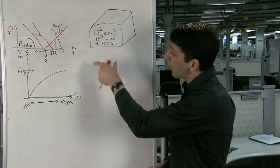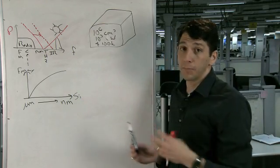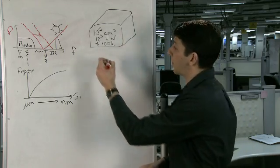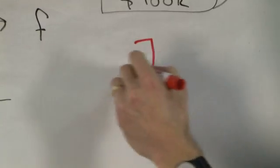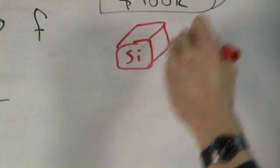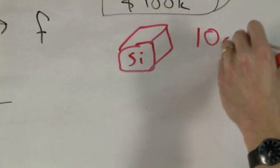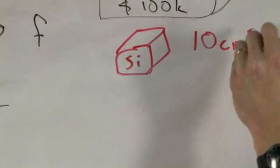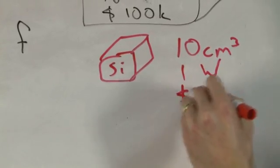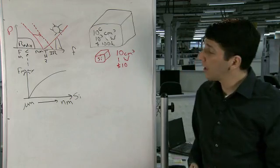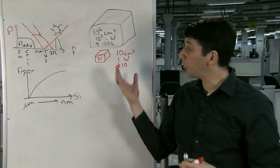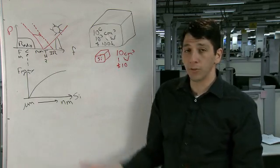Just as silicon-based devices have made computers much smaller, a silicon-based terahertz device is going to be orders of magnitude better than the current big-box system. We're talking about 10 cubic centimeters, about one watt, and costing about $10. With devices like this, you're really able to access this spectrum a lot better.